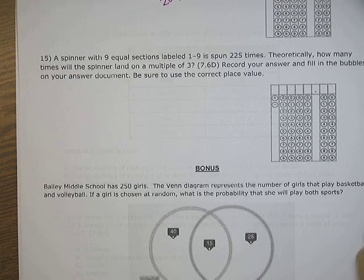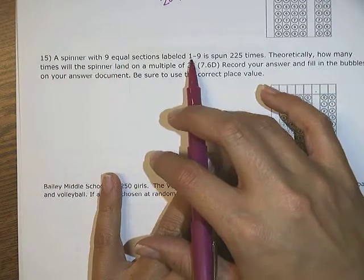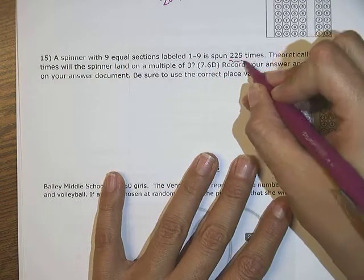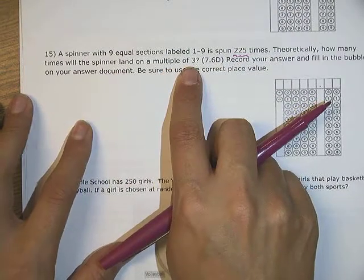Number 15, a spinner. Another one that was kind of missed a lot. A spinner with nine equal sections labeled one through nine is spun 225 times. Theoretically, how many times will the spinner land on a multiple of three?